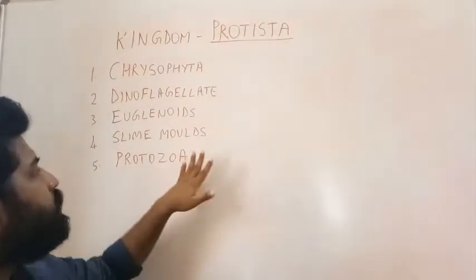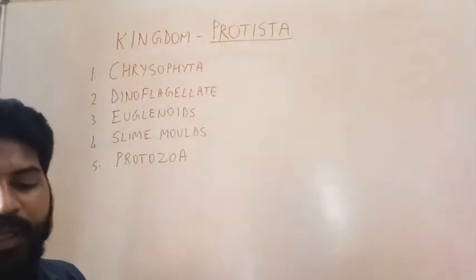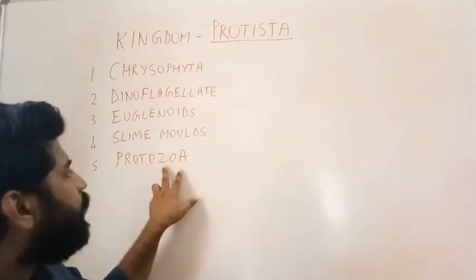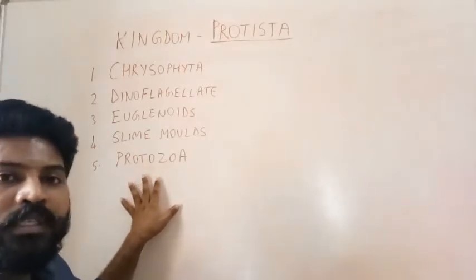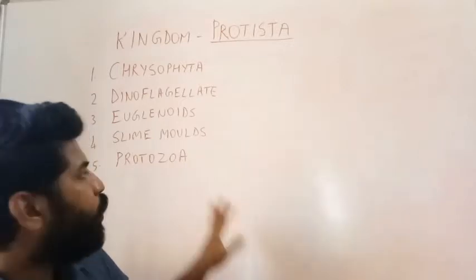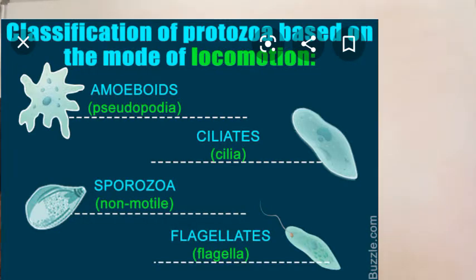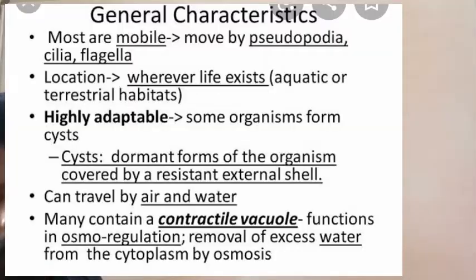The last phylum in Kingdom Protista is the Protozoans. The word protozoa suggests these could be ancestors of the first animals. Protozoans, based on their locomotion, are further divided into: amoeboid protozoans, ciliated protozoans, flagellated protozoans, and the non-motile sporozoans. They show movement with the help of cilia, flagella, or pseudopodia.